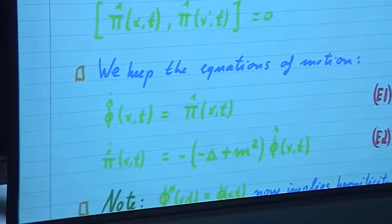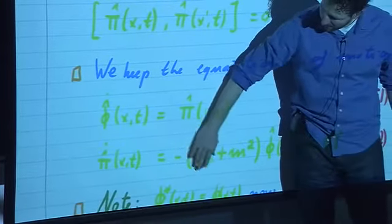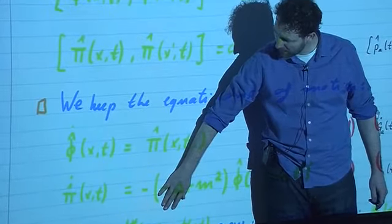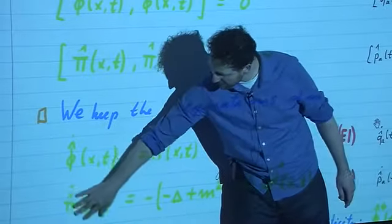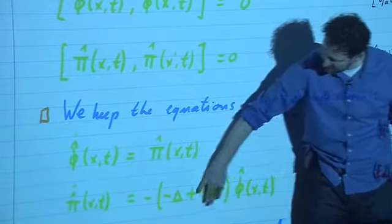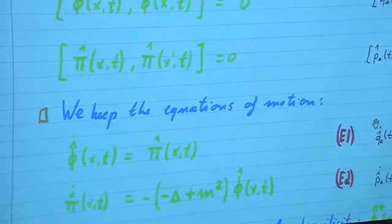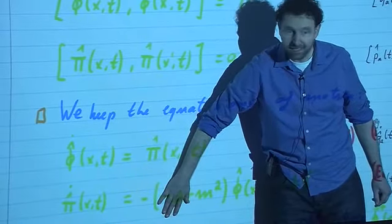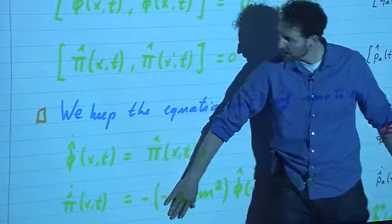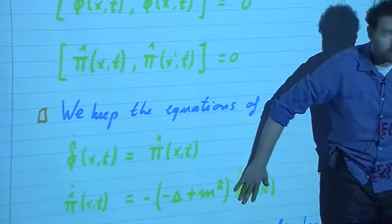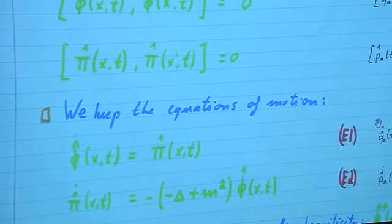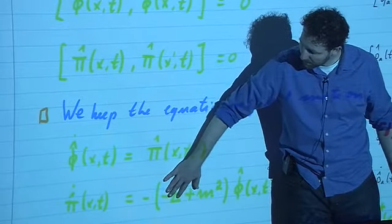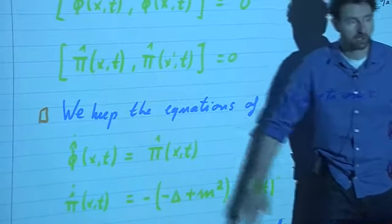Our interpretation was: neglect that term for a moment and look at the Klein-Gordon equation then. We have that the second derivative of phi is equal to minus m squared times phi itself at every x. This confirms our intuition that at every x we have a harmonic oscillator — the second derivative is proportional to the amplitude. But it's not the full truth, because we also have the Laplacian.